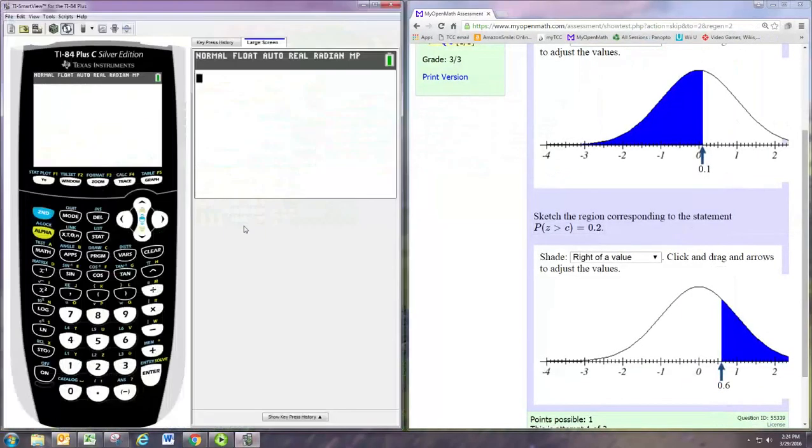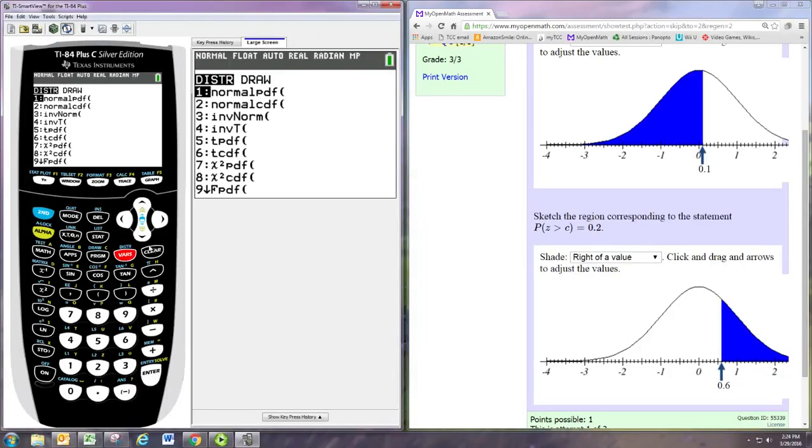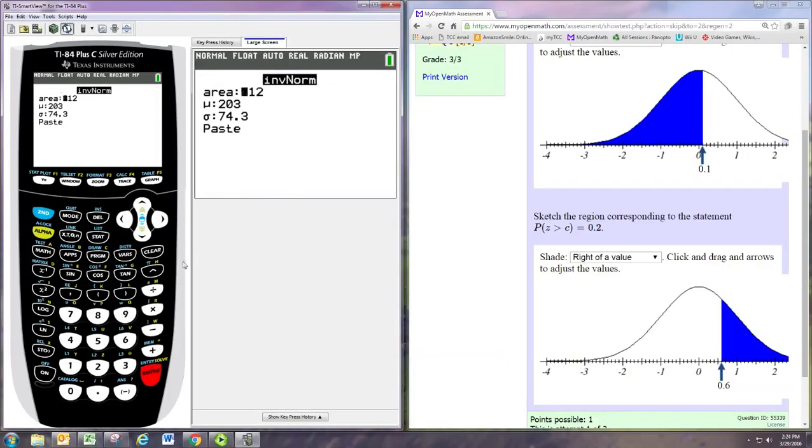Remember the graphing calculator takes an area on the left. So we use the inverse norm command, and for area we want to put in 0.8. The mean is 0 and the standard deviation is 1, because from the graph you can tell these are the standard normal distributions.